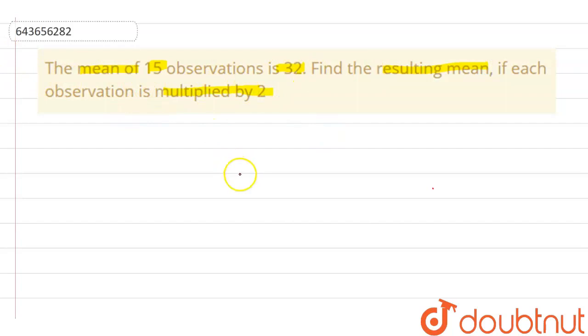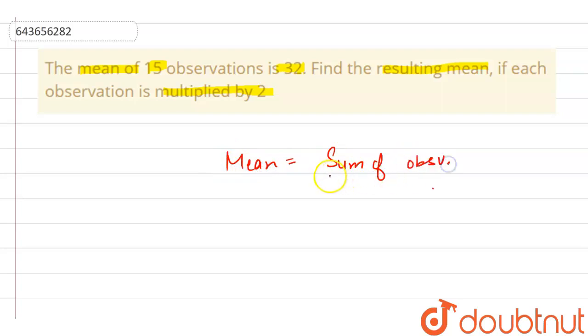As the question is about mean, we know that mean is equal to the sum of observations divided by the total number of observations.